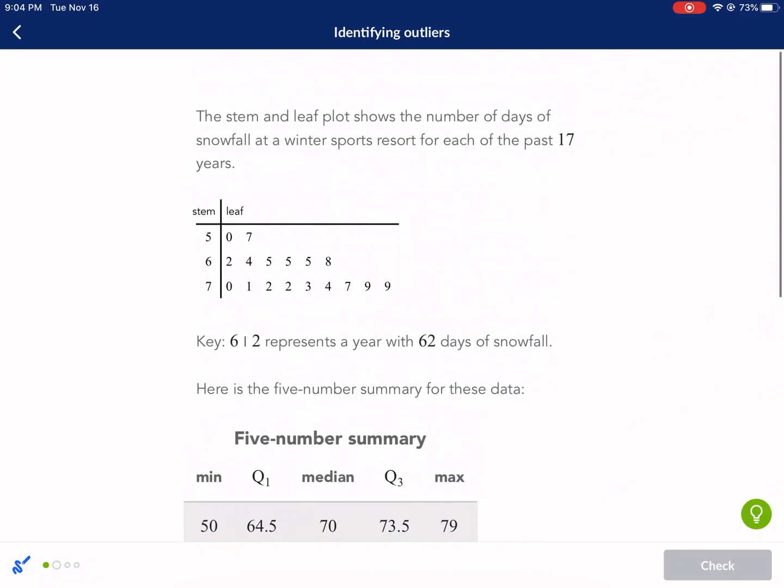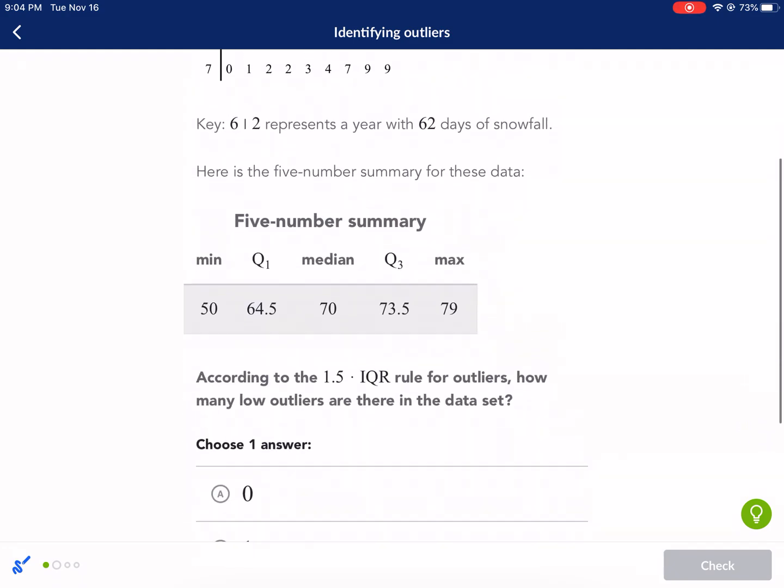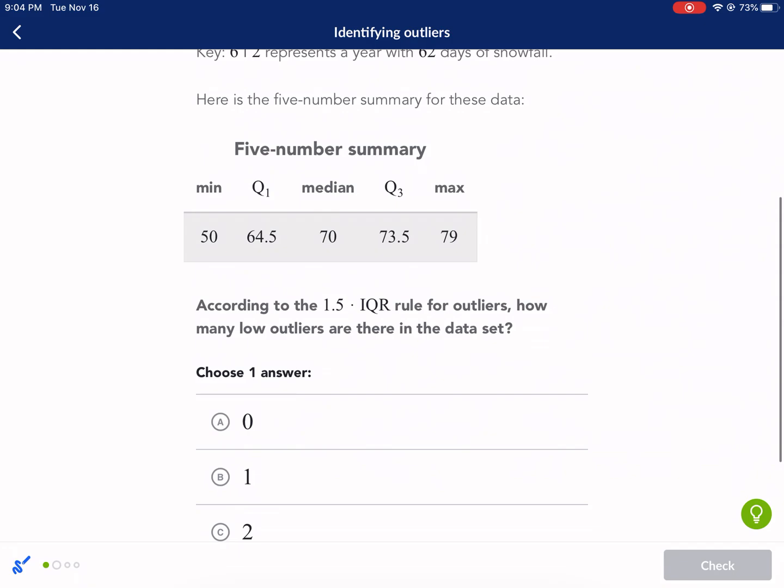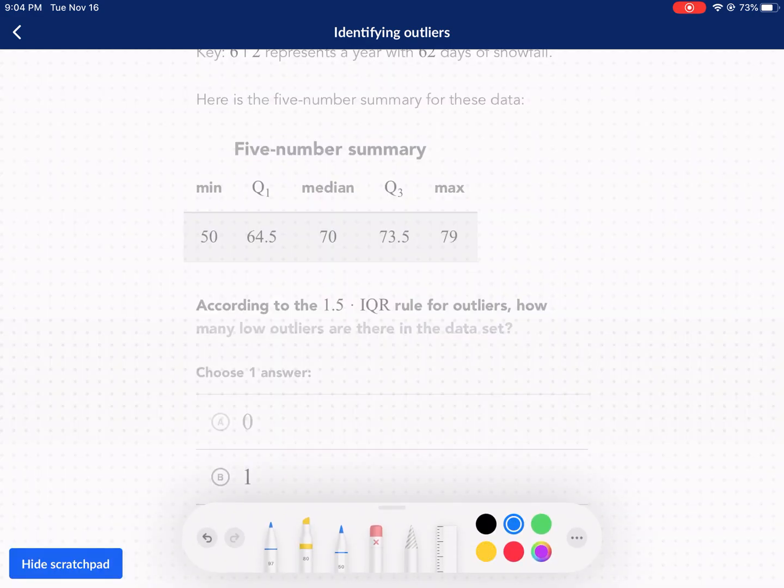All right, here we go, another one. We're going to get to the math. So we have min, Q1, median, Q3, max, and we're trying to find the low outliers. We already talked about the high outliers. Here was our box plot, this was our IQR, and we know that our critical points are Q1 and Q3. Now we want to see how far can we go to the left of Q1 and how far to the right of Q3. This time we're only interested in how far to the left of Q1 we can go because we're looking for low outliers.